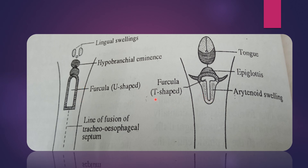On either side of the furcula, a swelling develops. This swelling is due to the presence of the arytenoid cartilage. The swelling of the arytenoid makes the furcula into a T-shaped structure — a T-shaped slit. The vertical limb lies between the two swellings of the arytenoid, and the horizontal limb lies towards the caudal part of the hypobronchial eminence.